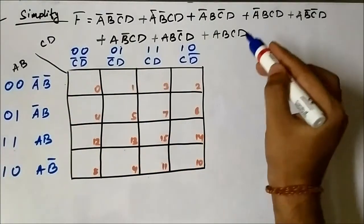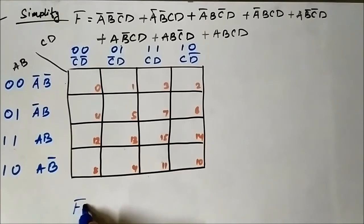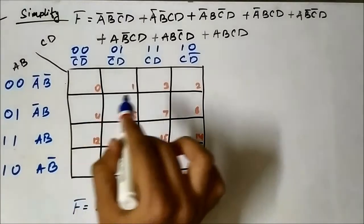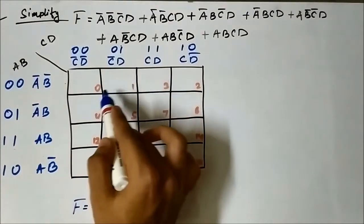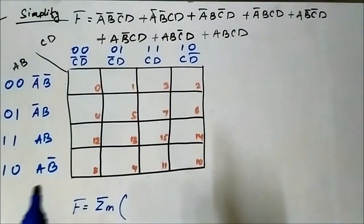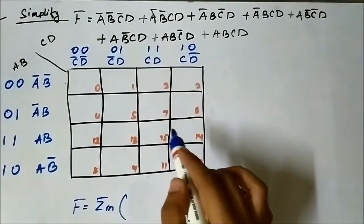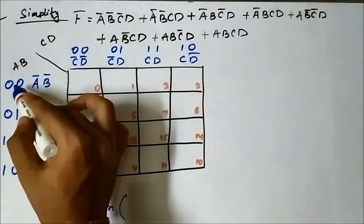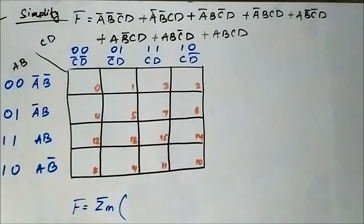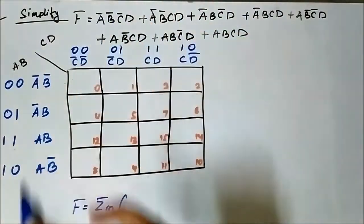Always represent the expression in terms of minterms so that it becomes easier to mark the respective cells. Each cell is marked with its equivalent decimal representation from 0 to 15 — with 4 variables the maximum decimal representation is 15. Always pay attention to the horizontal and vertical Gray code ordering: 00, 01, 11, 10. The minterm representation here gives us the decimal values.